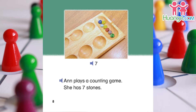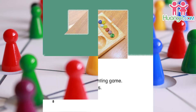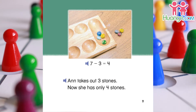Ann plays a counting game. She has seven stones. Ann takes out three stones. Now she has only four stones. Seven minus three equals four.